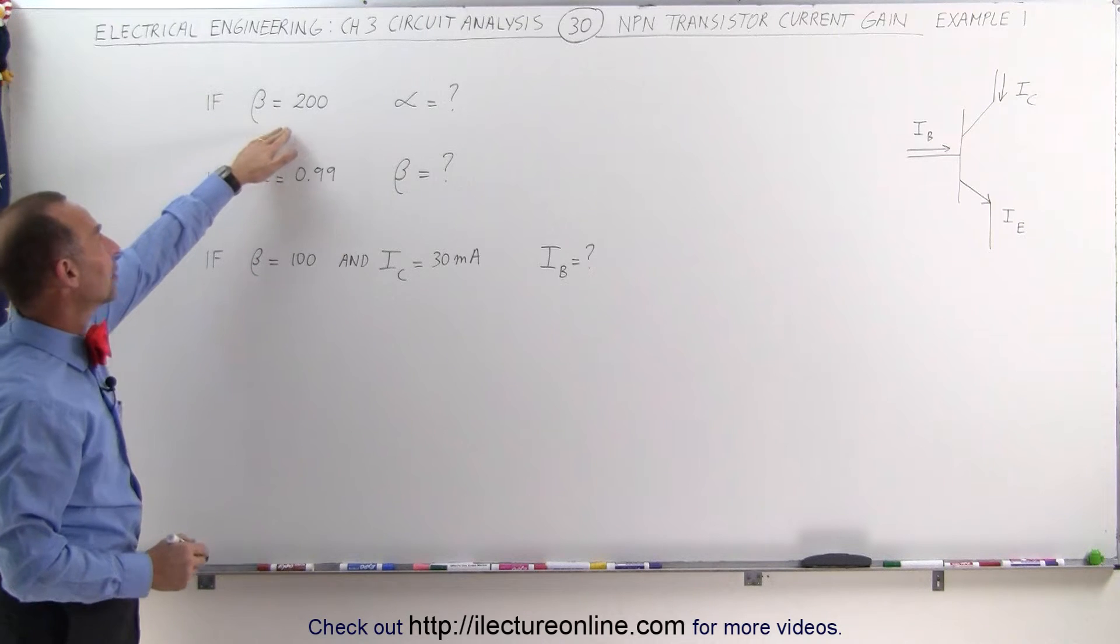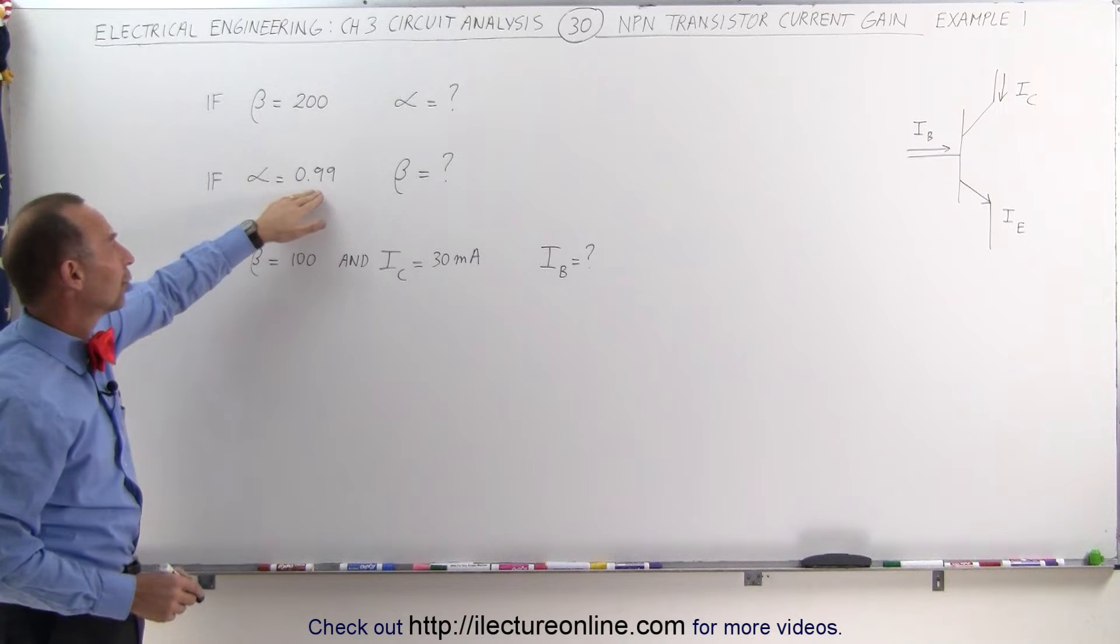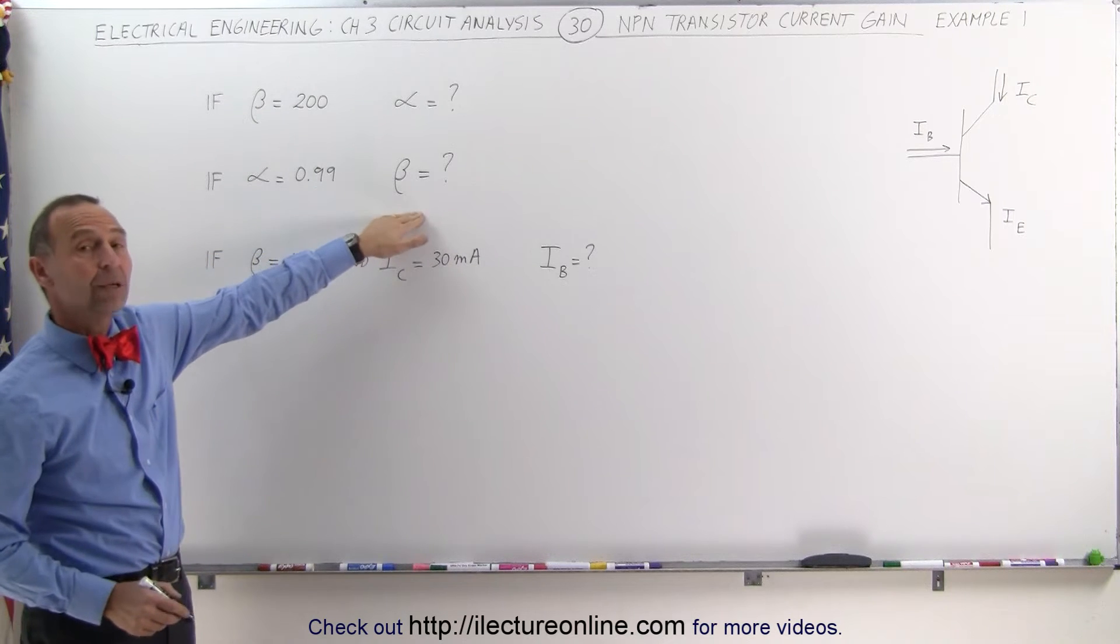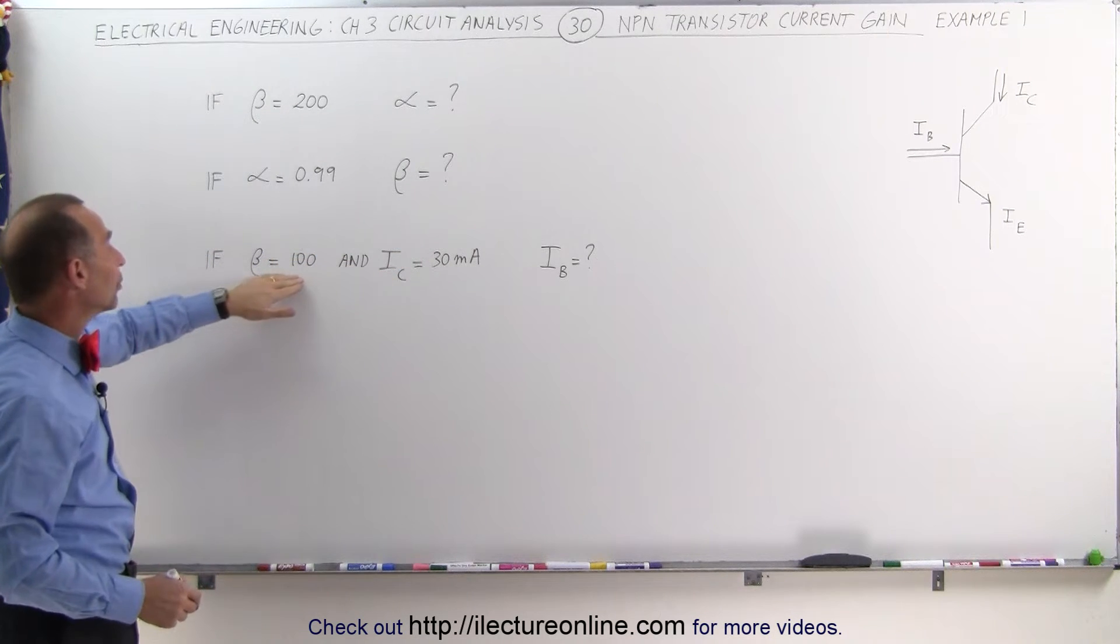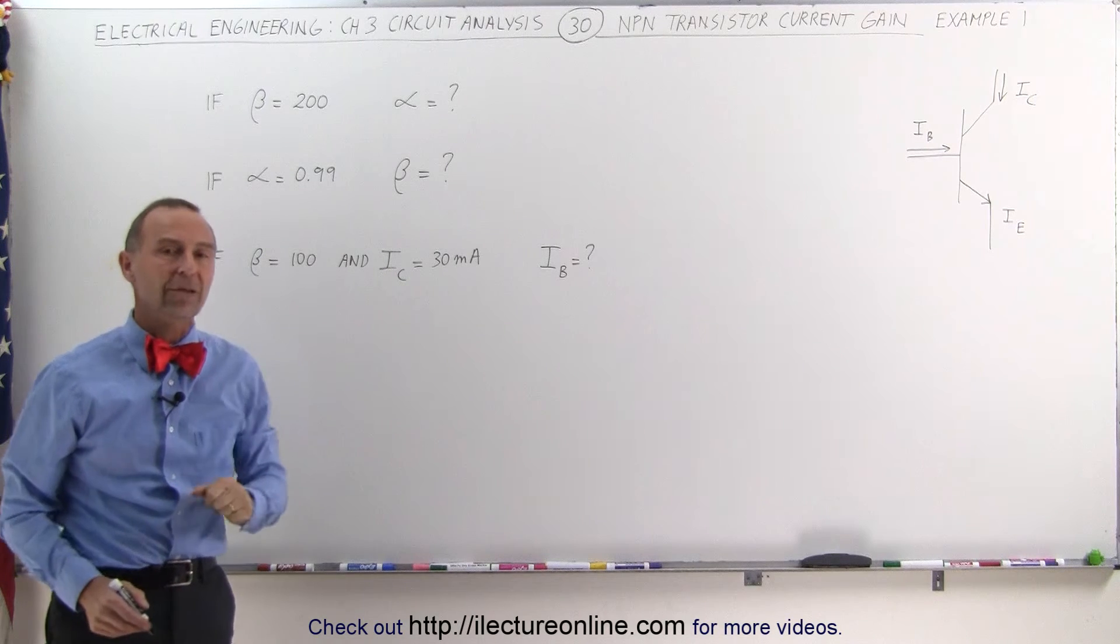Here we say if beta equals 200, what is alpha equal to? If alpha is equal to 0.99, what is beta equal to? And if beta is equal to 100 and the collector current is equal to 30 milliamps, what is the base current?